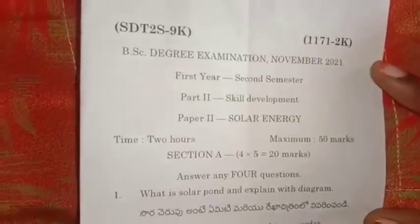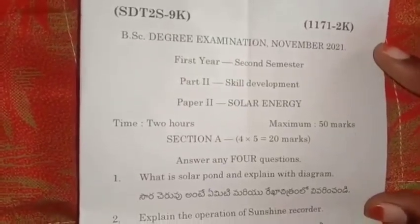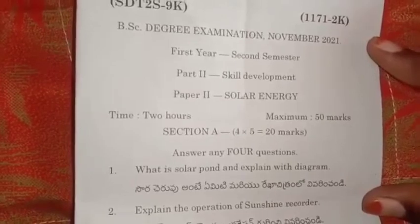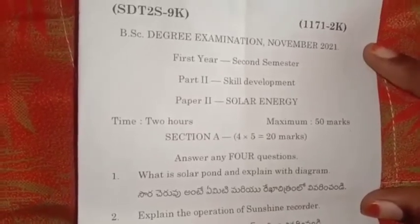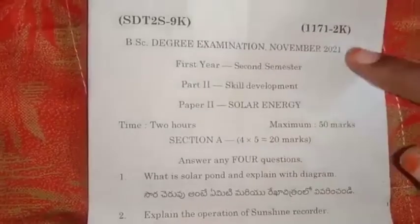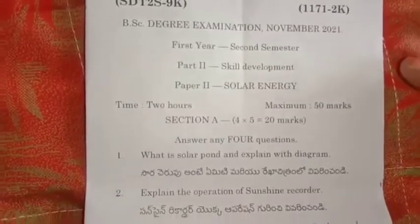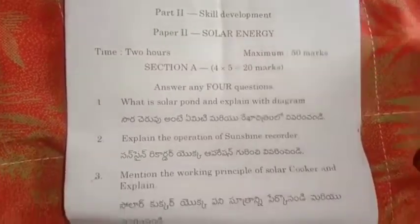Hi friends, today I am looking at the degree first year second semester general paper, solar energy paper. This is the 2021 paper. This is ANU — Acharya Nagarjuna University.